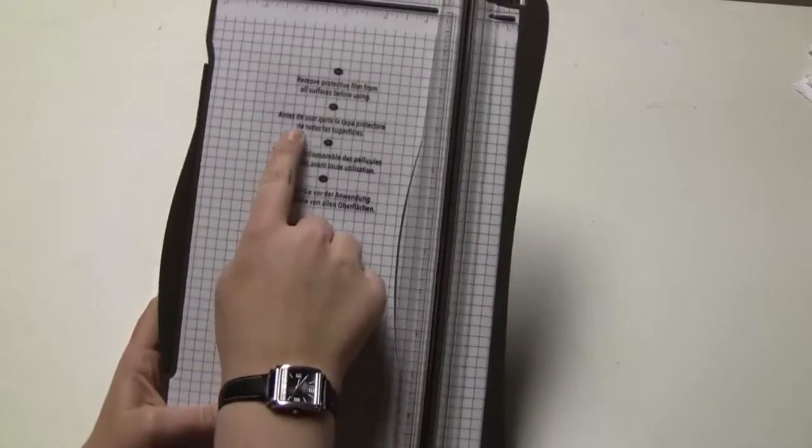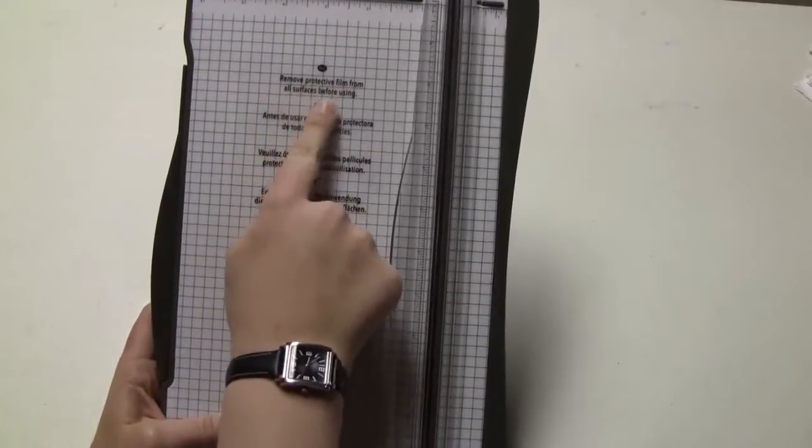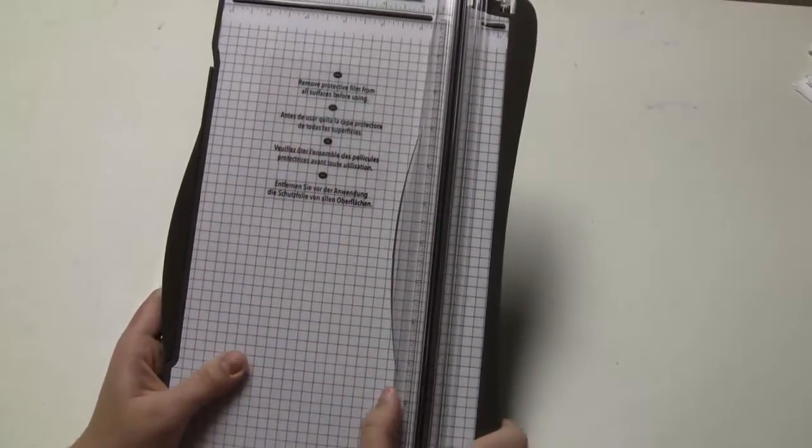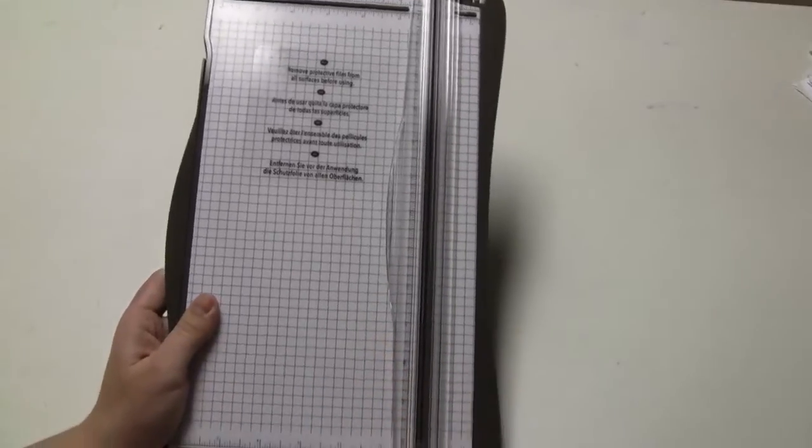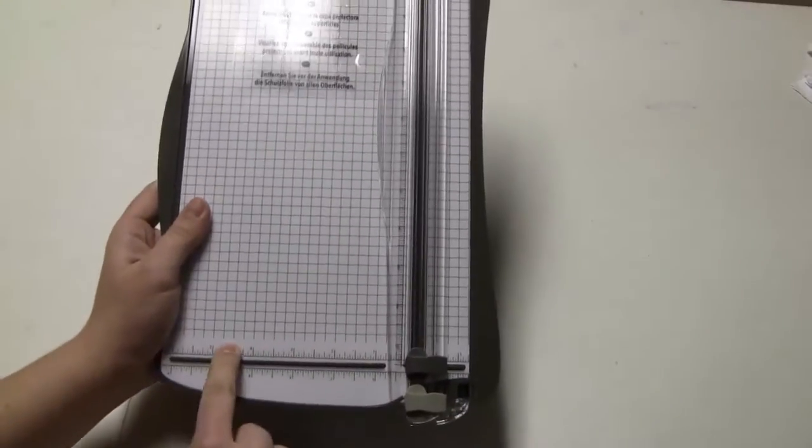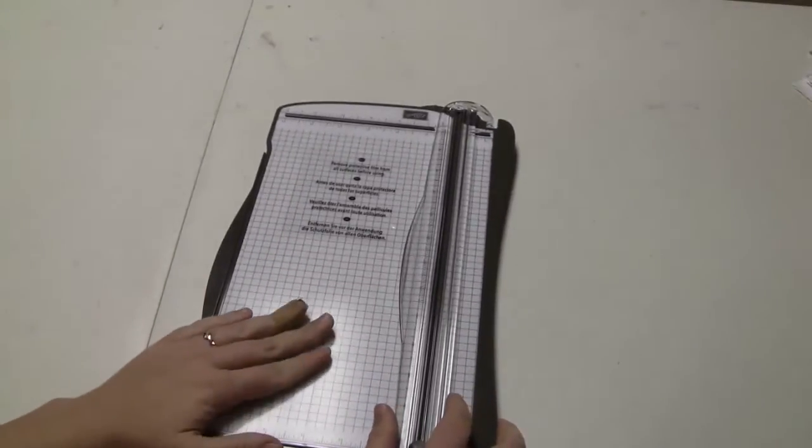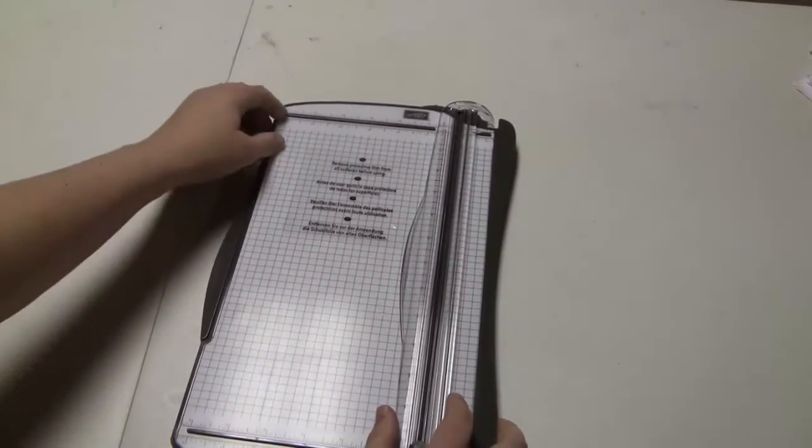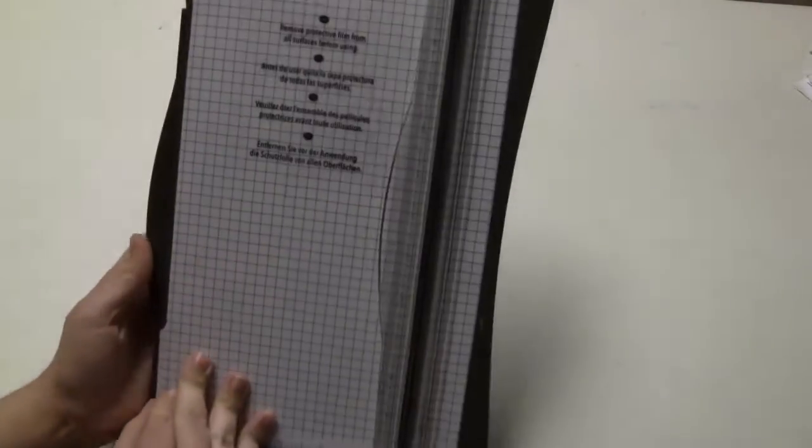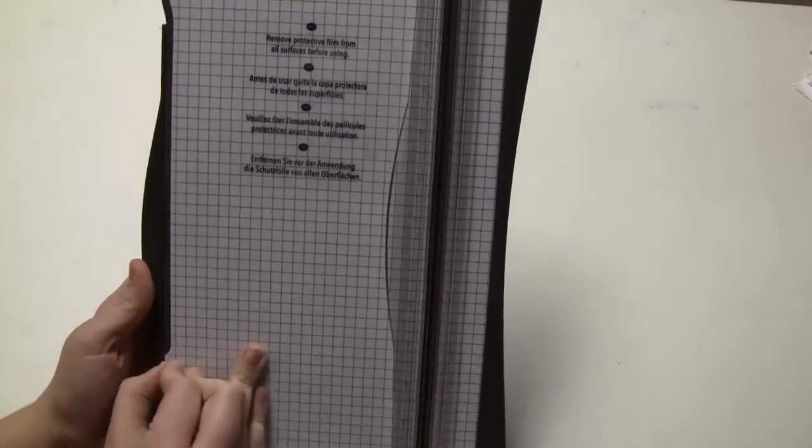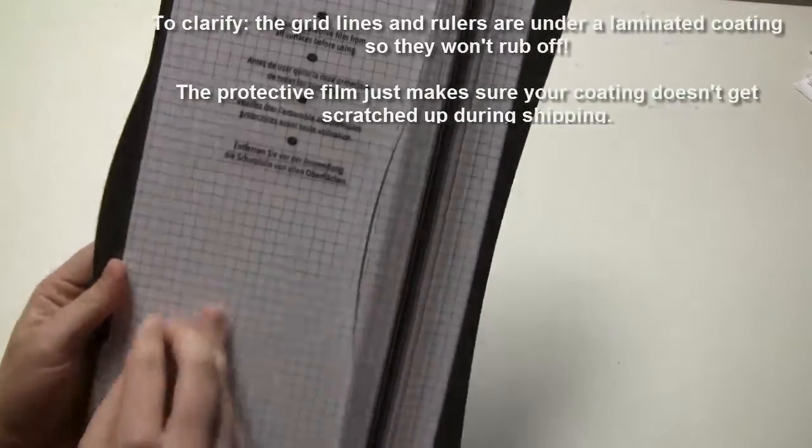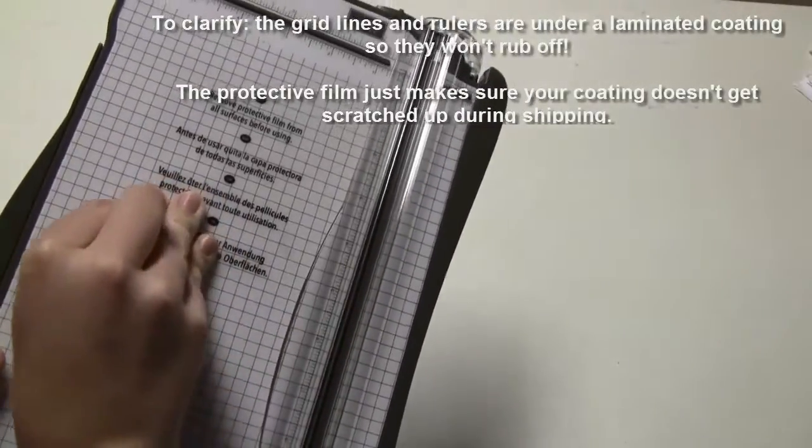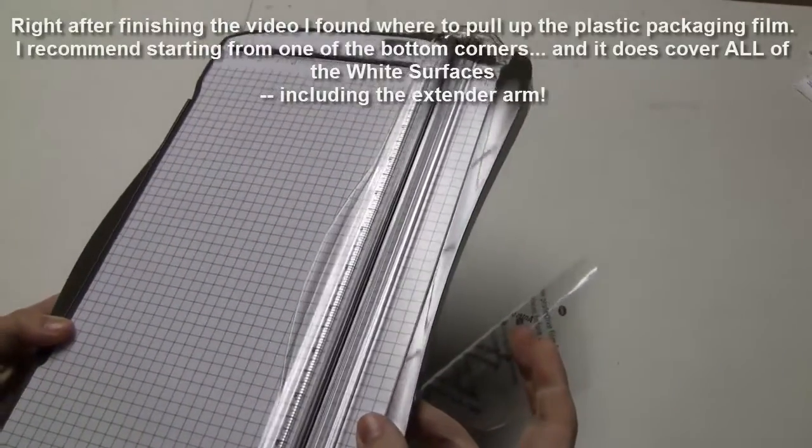You'll notice that it says right here 'remove protective film from all surfaces before using.' That's because they have put all of these lines and numbers underneath a laminated top, so they've put this protective covering to make it so that doesn't get damaged. Now I haven't tried peeling it up yet, but I can see that it may be a little bit hard to do.